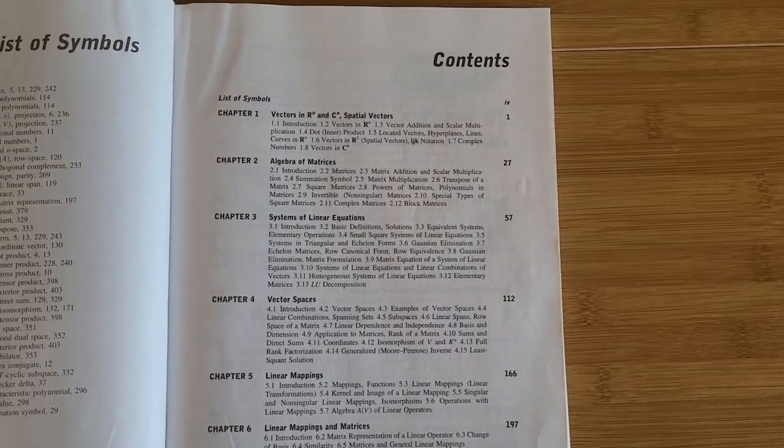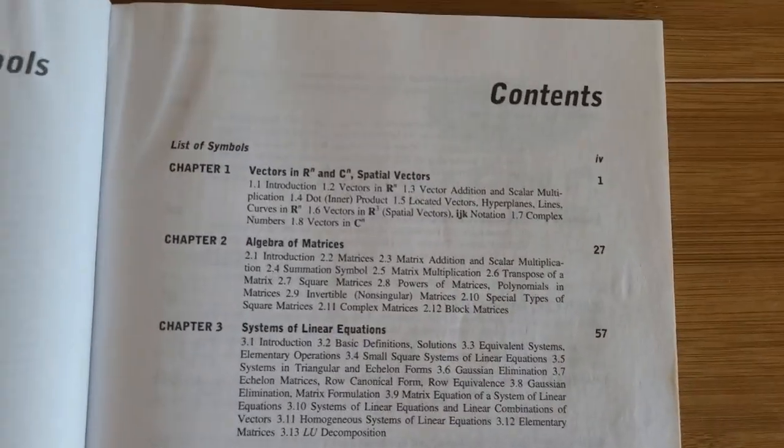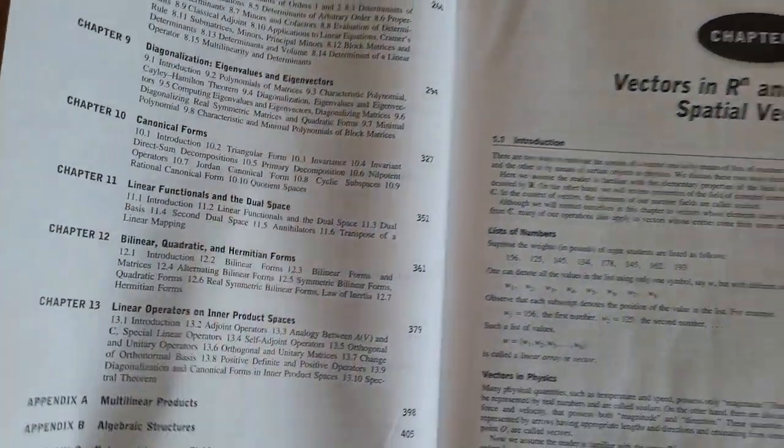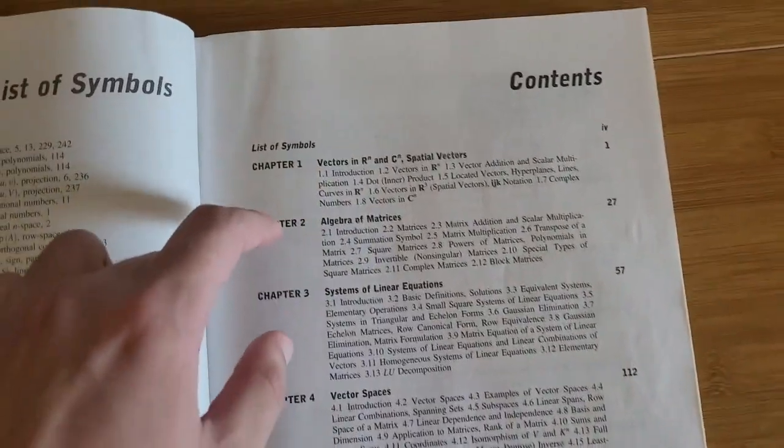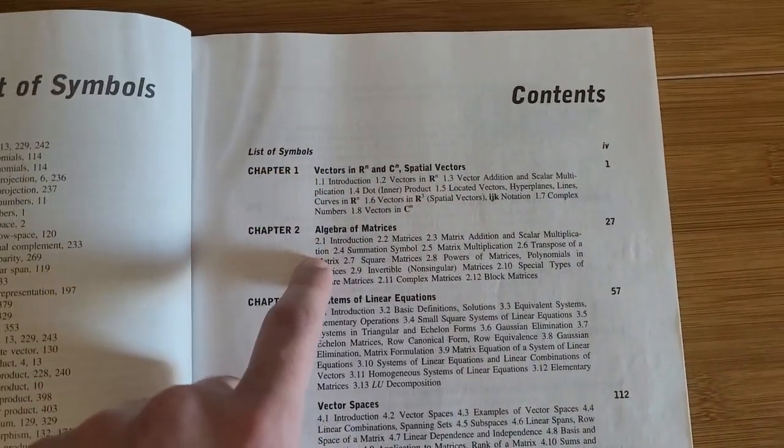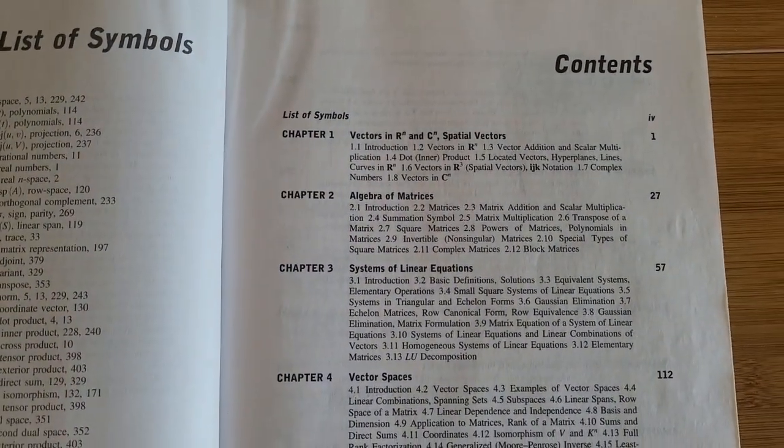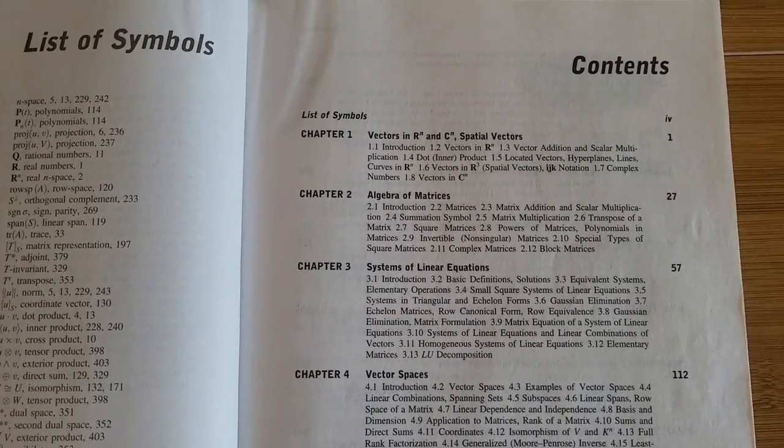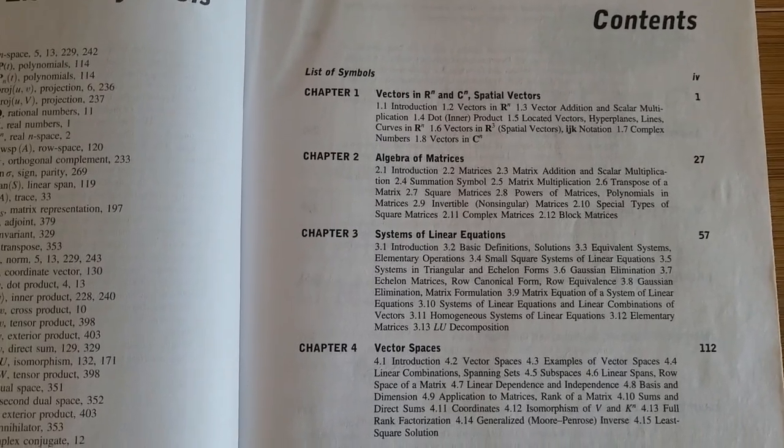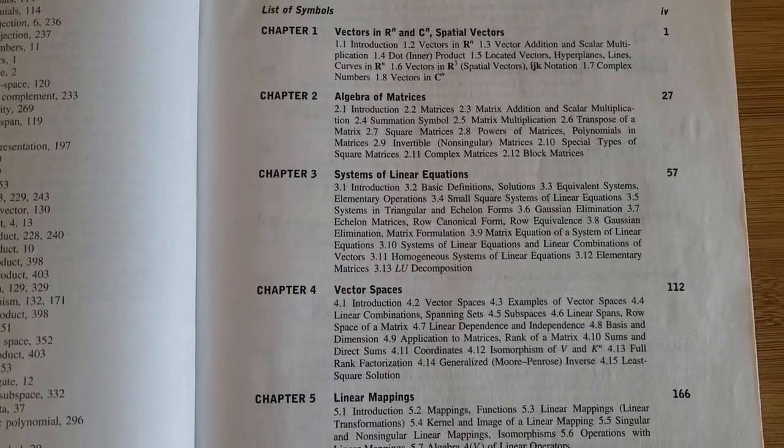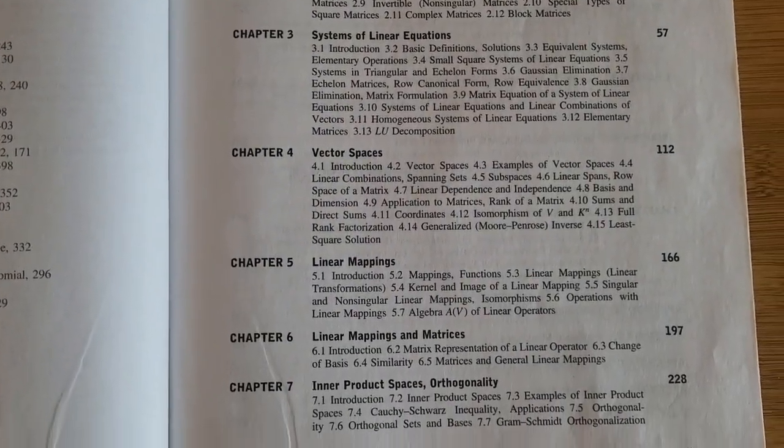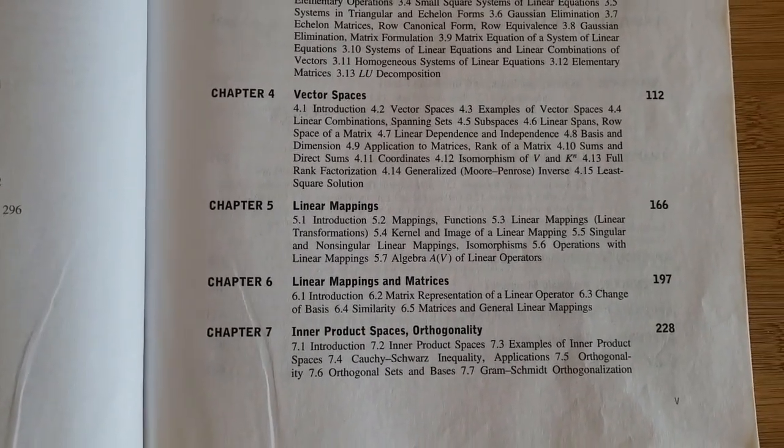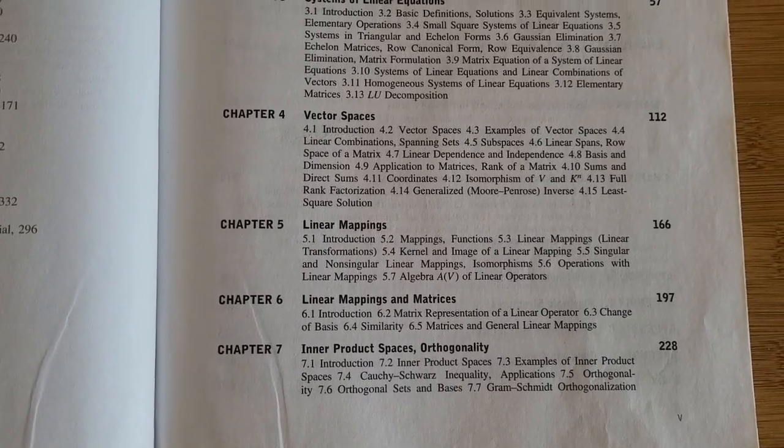If you look at the table of contents here, we start with chapter 1. There's about 13 chapters, and each chapter is broken up into separate sub-chapters. We have chapter 1, which is vectors in R and CN, an introduction to real numbers and complex numbers. Chapter 2 is algebra of matrices, then systems of linear equations, vector spaces, linear mappings, linear mappings and matrices, and chapter 7 is inner product spaces and orthogonality.